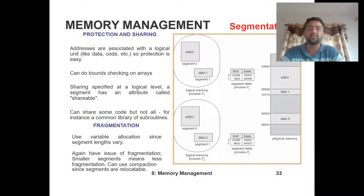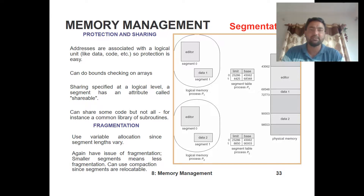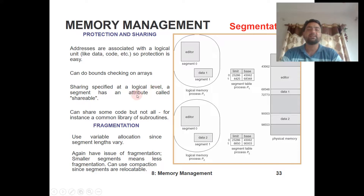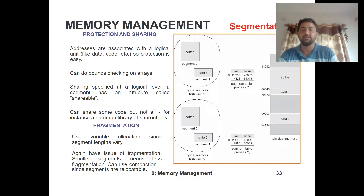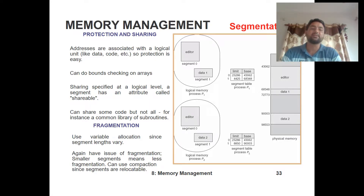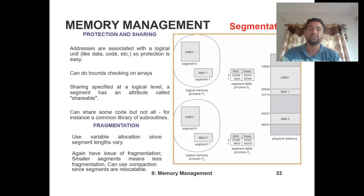Segmentation provides protection and sharing. Protection is easy because addresses are associated with a logical unit, allowing bounds checking on arrays using the segment limits. Sharing is specified at a logical level — a segment has a shareable attribute, meaning some code can be shared but not all. For example, common library routines already defined in the system can be shared between processes, as we saw with the editor module shared across the two processes.